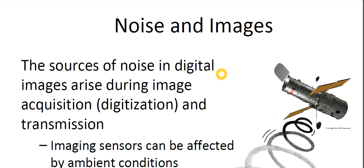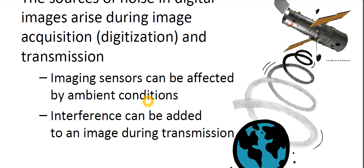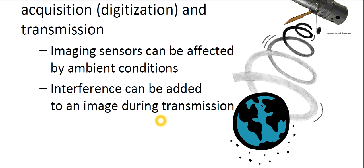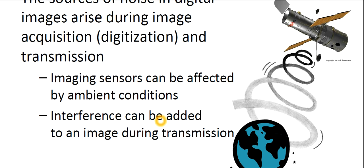The sources of noise in digital images arise during the image acquisition process, also known as digitization, and transmission. Image sensors can be affected by ambient conditions. Interferences can be added to an image during transmission.